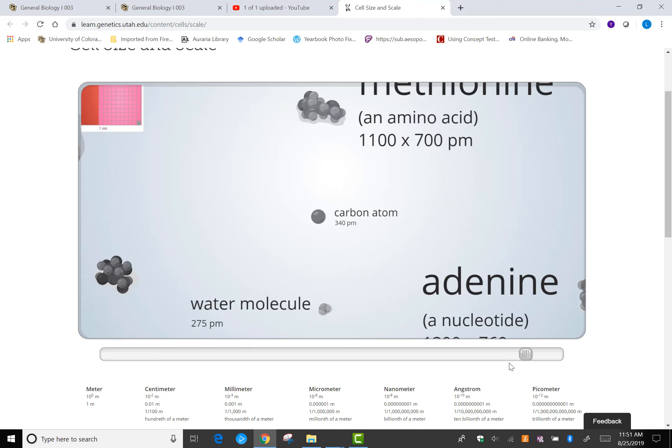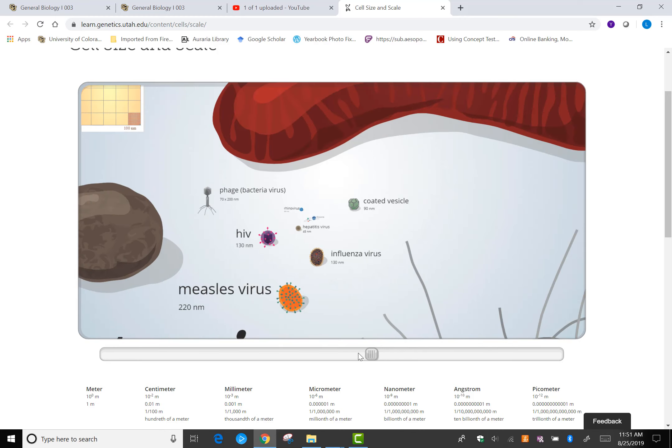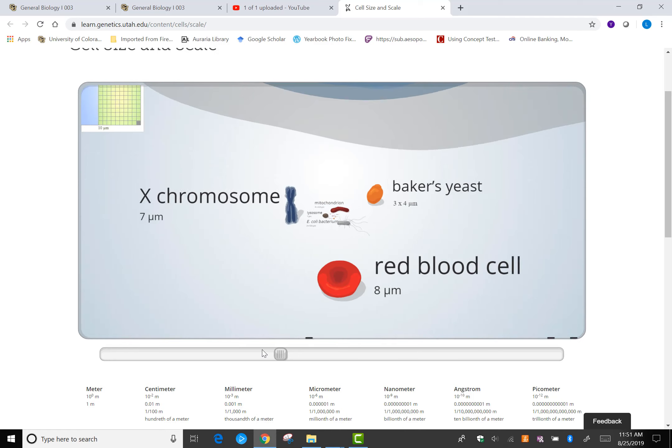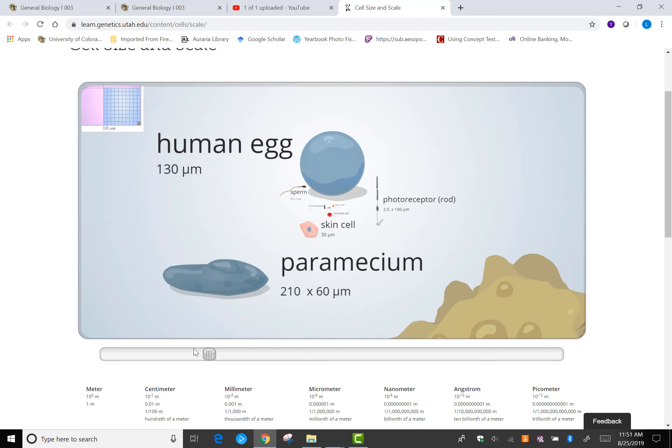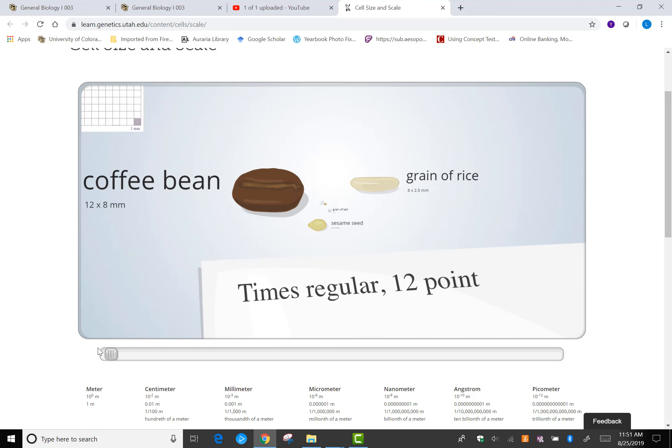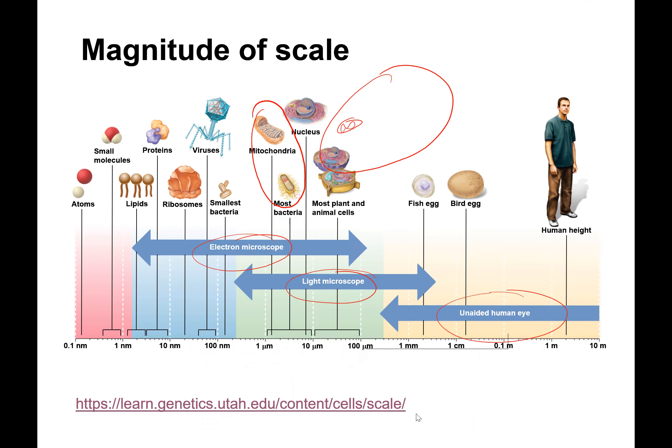So what you might see on an exam is a list of items. And you have to put them in the right order of size. So just take a look at this when you get a chance. Okay, and that's what I have for you for why cells are so small.